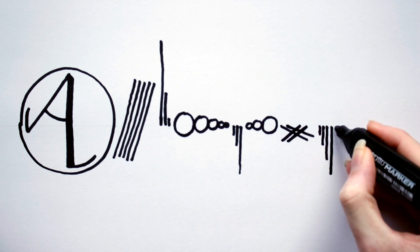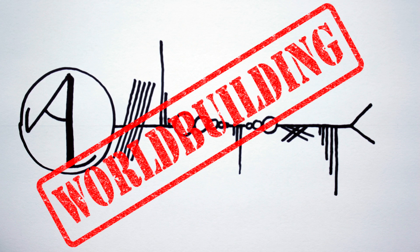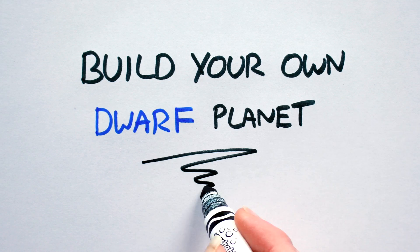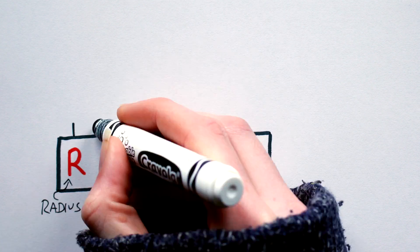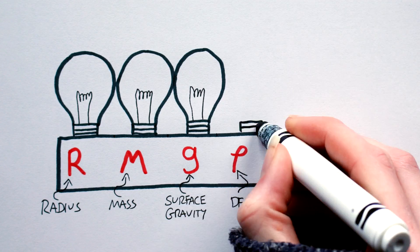Here you will learn everything you ever wanted to know about worldbuilding, and then some. The most important variables to consider when building any planet, dwarf or not, are radius, mass, surface gravity, and density.